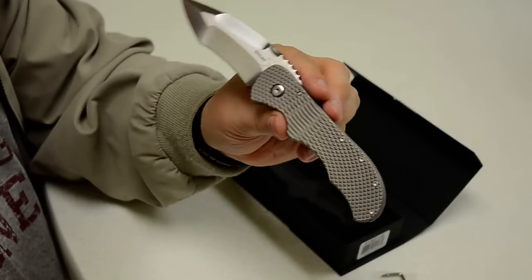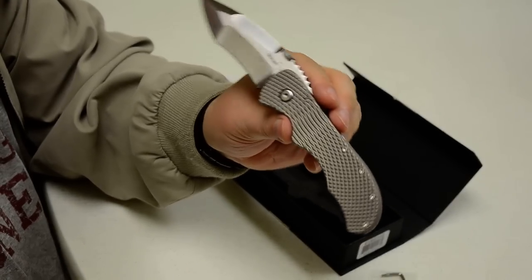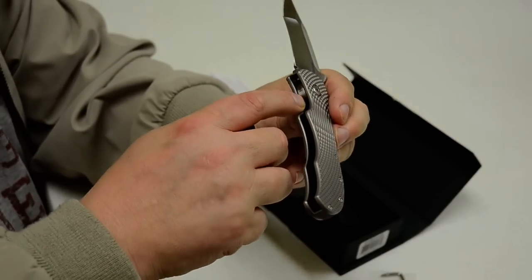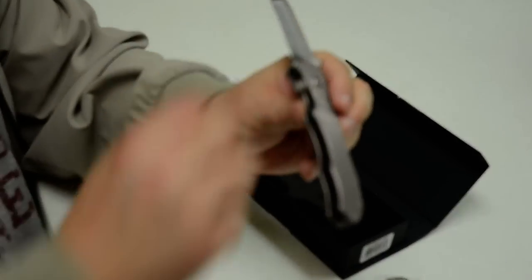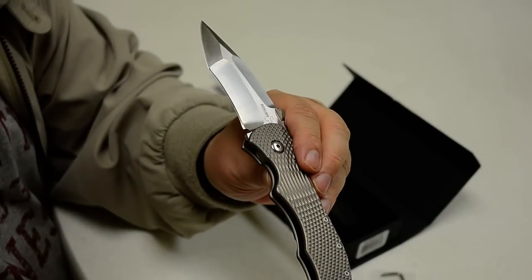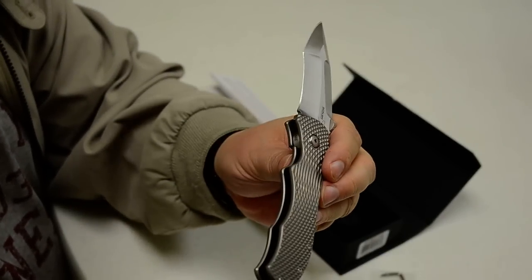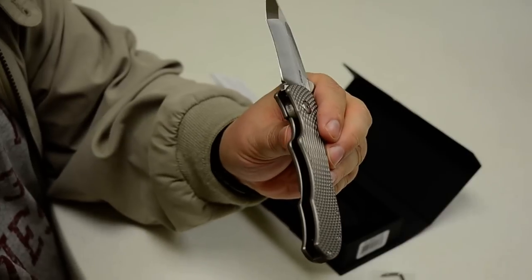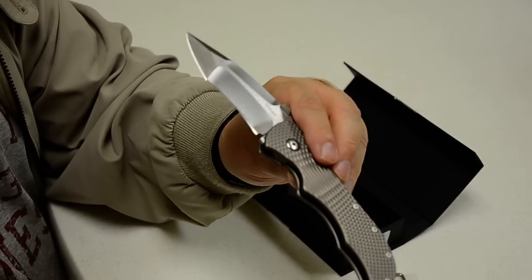So anyway, like I said, I'm not going to take this knife apart. If I've got a problem, if the lock face is too steep like people are talking about, and it gets a jiggle in there, guess what? I'm going to send it back to Boker and tell them to fix it. And they can change the lock geometry if they have to. I don't give a damn what they do. With a lifetime warranty, it's kind of their problem.